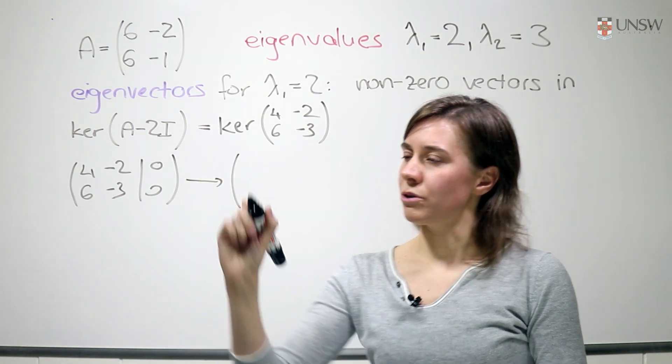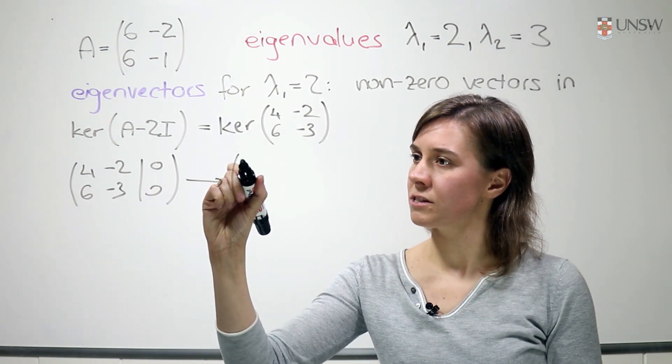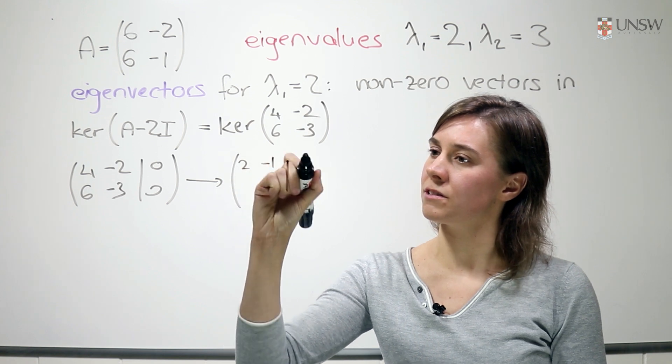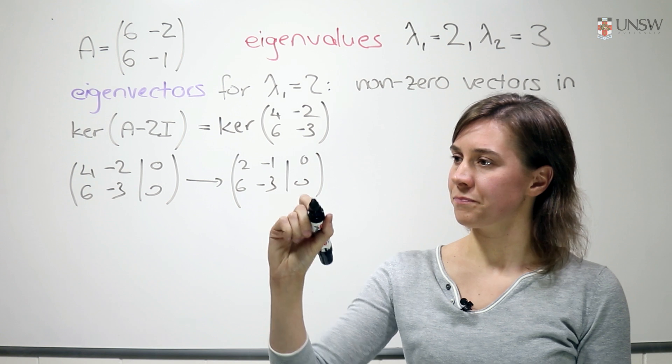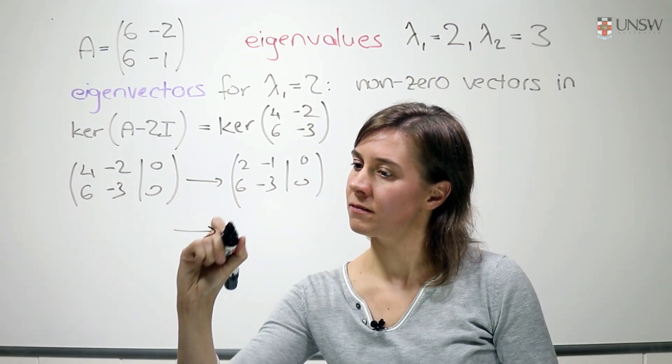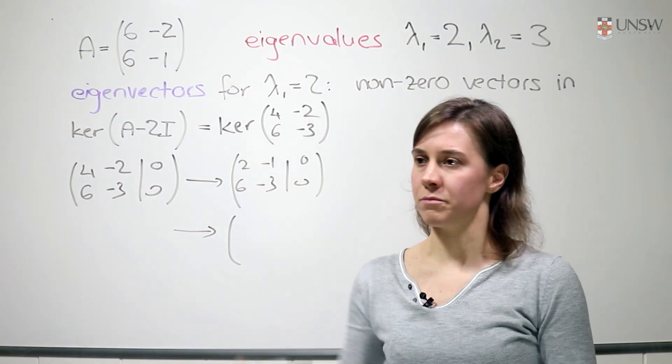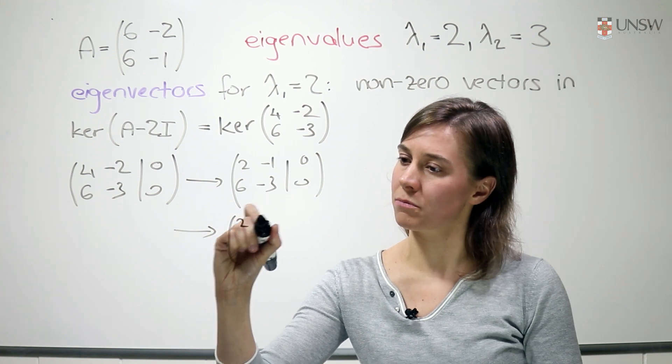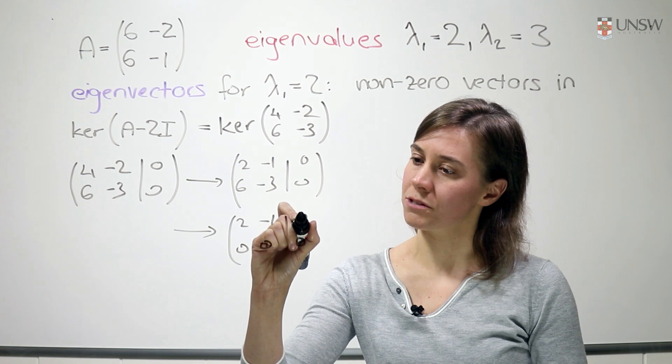So let's do some row operations. First I'm going to divide the first row by 2. So this is 2 minus 1, 0, 6 minus 3 and 0. And then let's subtract 3 times the first row from the second row. So 2 minus 1, 0 and 0, 0, 0.